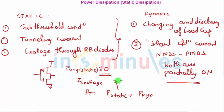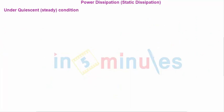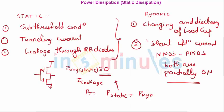Under quiescent conditions, since the input does not change there is no change at the output, and the quiescent or steady-state power dissipation for a CMOS inverter or any CMOS circuit is approximately equal to zero. Therefore the only factors constituting static power dissipation are sub-threshold current, tunneling current, and leakage through reverse-bias diodes.